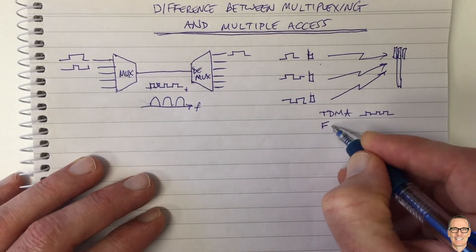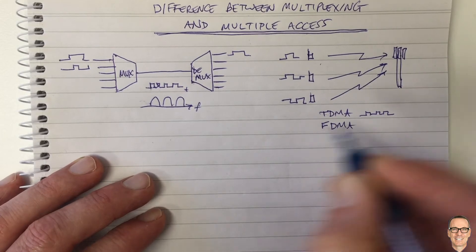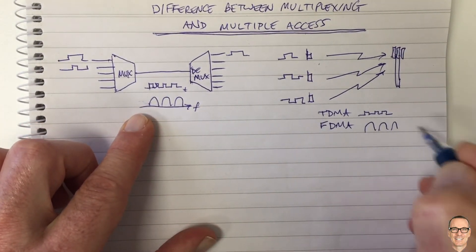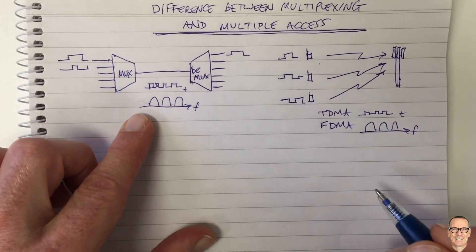Or we can have frequency division multiple access, just like we had with the optical, where each user gets their own frequency band. This is in the frequency, this is in the time.